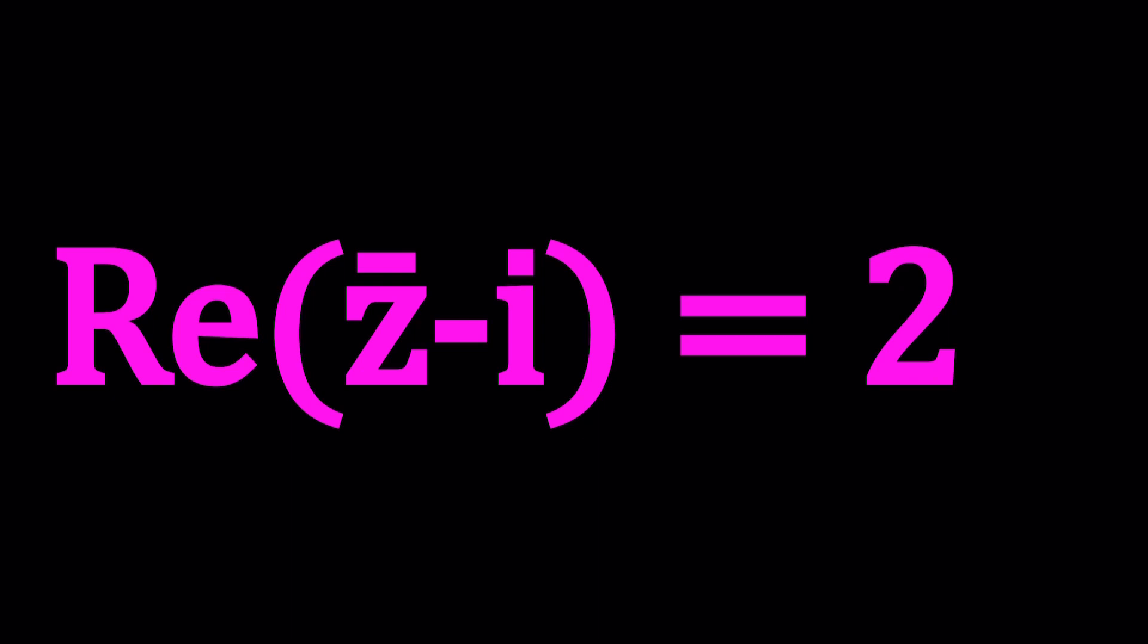So basically you have a complex number equation here. When you solve this complex number, you're going to get a bunch of solutions. And all those solutions are going to form a curve, and that curve could be a line as well obviously, is called a locus.